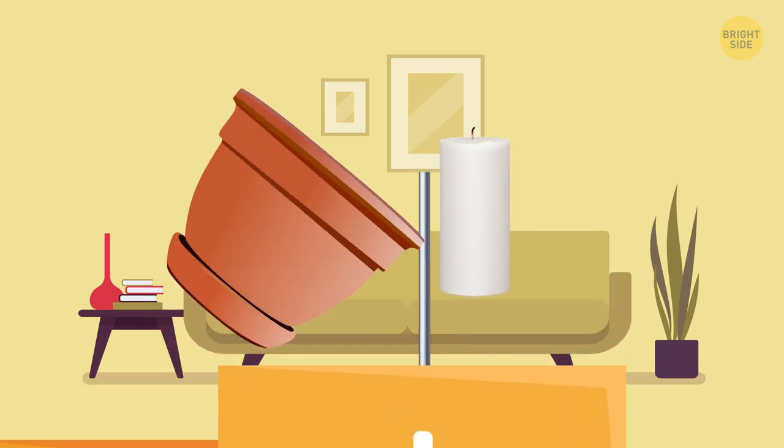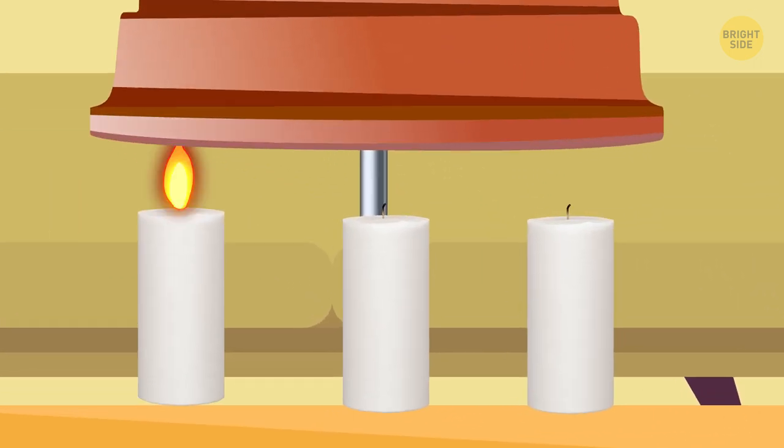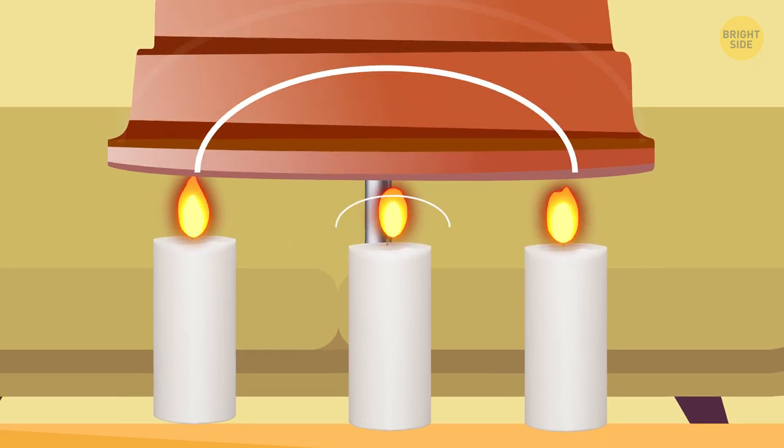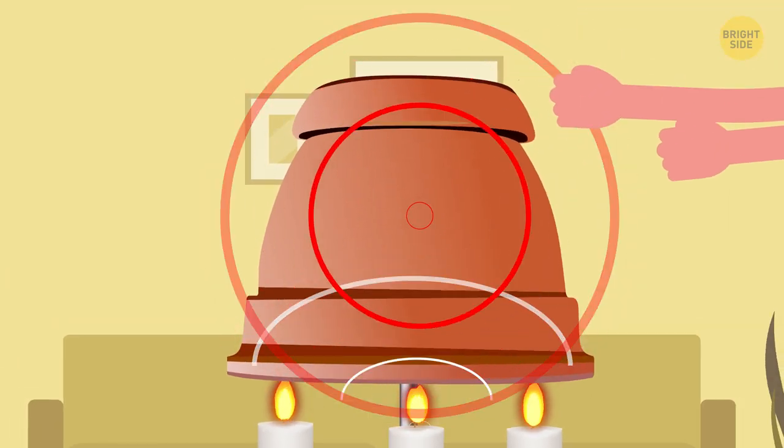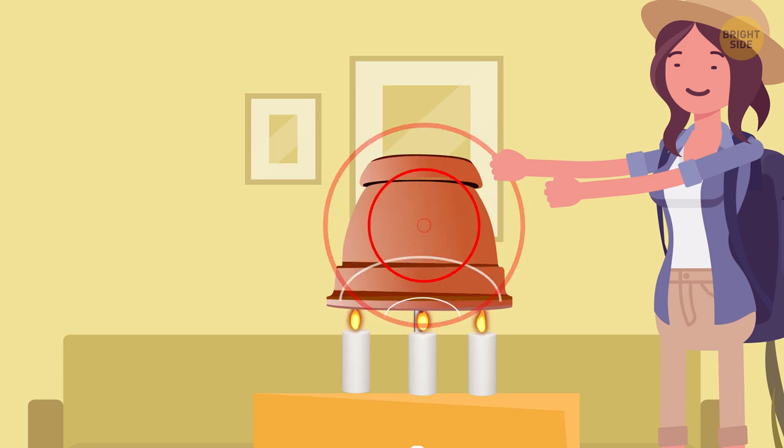Turn the clay pot upside down and place it on top of the rod so that it hangs in the air. Place some candles around the rod and light them. The heat from the candles will get trapped under the pot. It will absorb this heat and radiate it around. This way, even candles would become a useful source of warmth.